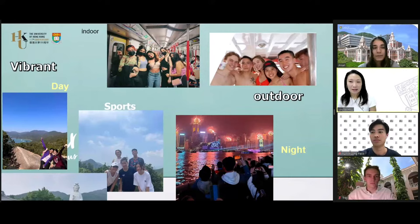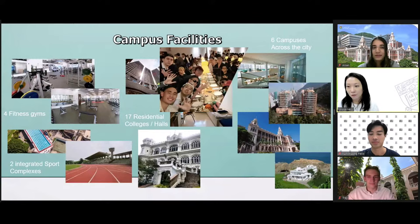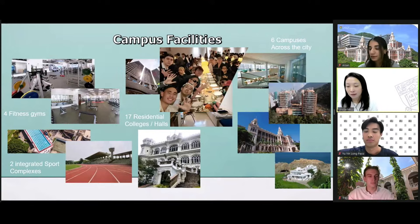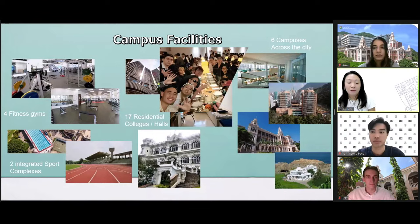We are really centrally located, meaning we can eat anywhere in Hong Kong. We actually have over 17 residential halls and colleges. Our 17 residential halls cater to a wide range of student preferences and needs, from single-gender halls to mixed-gender halls, as well as different types of halls based on different interests and cultural backgrounds.